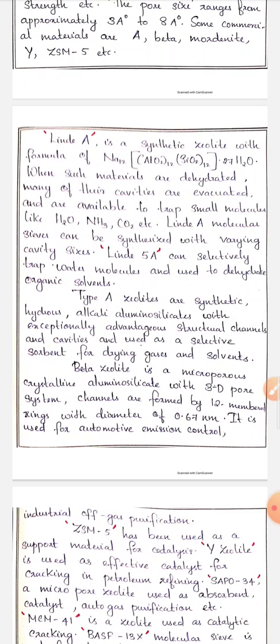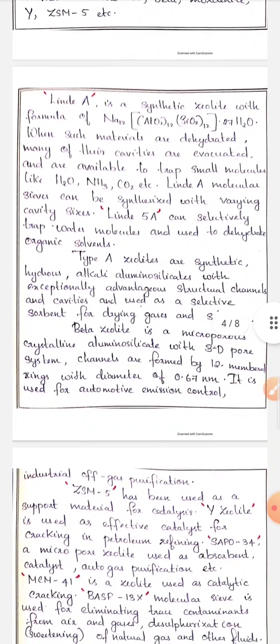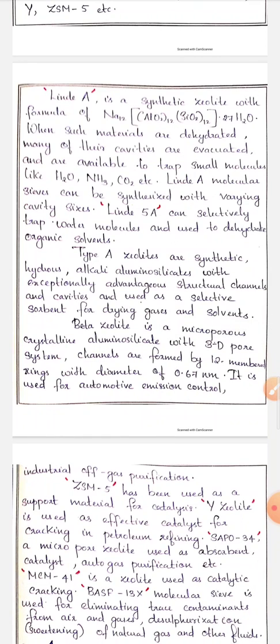Another is beta-zeolite. It is also a microporous crystalline aluminosilicate with 3D pore system and the channels are formed by 12-membered rings and has a diameter of 0.67 nanometer. It is mainly used for automotive emission control, industrial off-gas purification, etc.